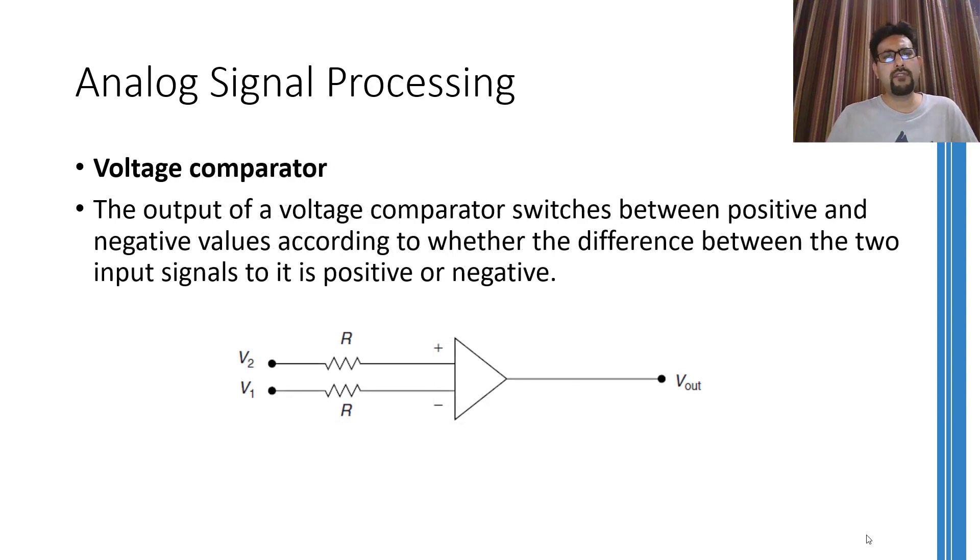A voltage comparator is another very important application of an operational amplifier. Its operation is as simple as it looks. The output of this circuit will be saturated on the positive side or the negative side depending on the comparison between the two input voltages. For example, if V2 is larger than V1, then the output would be saturated on the positive side whereas it will be saturated on the negative side if the case is opposite.